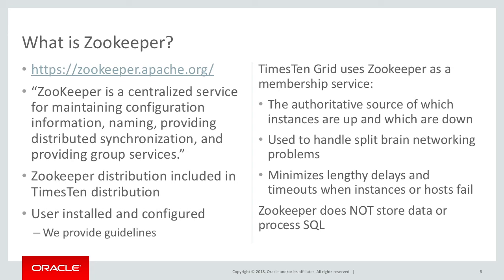This turns out to be very handy in handling split-brain networking situations. Suppose you have two racks of servers with instances in each and your connection between those racks goes down. Do you wind up with two independent grids that don't know anything about each other and do things independently? That could be really bad. Or does one side win and the other goes idle? In X10 grid, we want one side to win and the other side to go idle, so we don't wind up with a single row having incompatible updates done in both racks. And ZooKeeper allows us to do that.